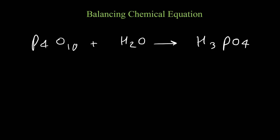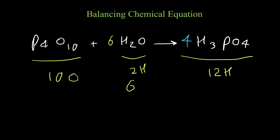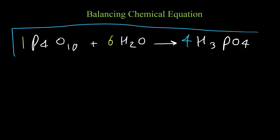Let's work on the reaction of tetraphosphorus decaoxide and water. Starting with phosphorus — four on the left and one on the right, so I put four in front of phosphoric acid. Now balancing hydrogen: on the right we have twelve hydrogen, and on the left only two from water, so I put six in front of water. Double-checking oxygen: ten from P₄O₁₀ and six from water gives sixteen on the left; four times four is sixteen on the right. Everything is balanced.